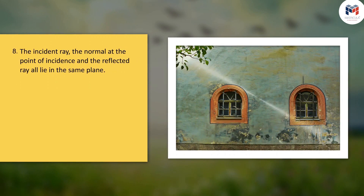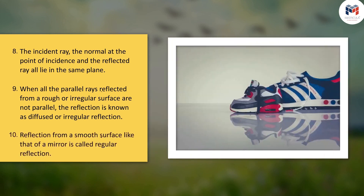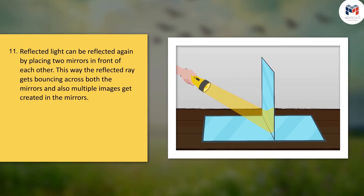The incident ray, the normal at the point of incidence, and the reflected ray all lie in the same plane. When all the parallel rays reflected from a rough or irregular surface are not parallel, the reflection is known as diffused or irregular reflection. Reflection from a smooth surface like that of a mirror is called regular reflection. Reflected light can be reflected again by placing two mirrors in front of each other, causing the reflected ray to bounce across both mirrors and creating multiple images.